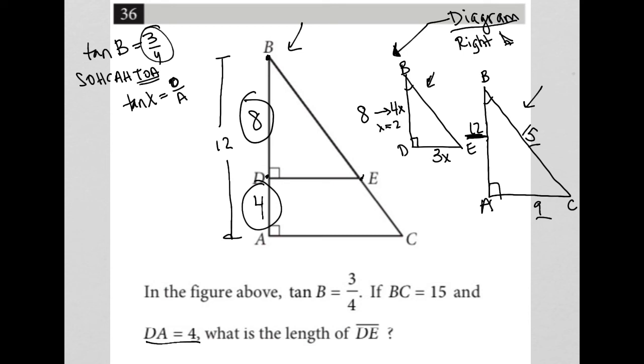So, if that x is equal to 2, then so is this x here. So, we would have a side 8 here, and then we'd have 3 times 2, making this a 6 here for the length of DE. And again, this is also a 3, 4, 5 right triangle.